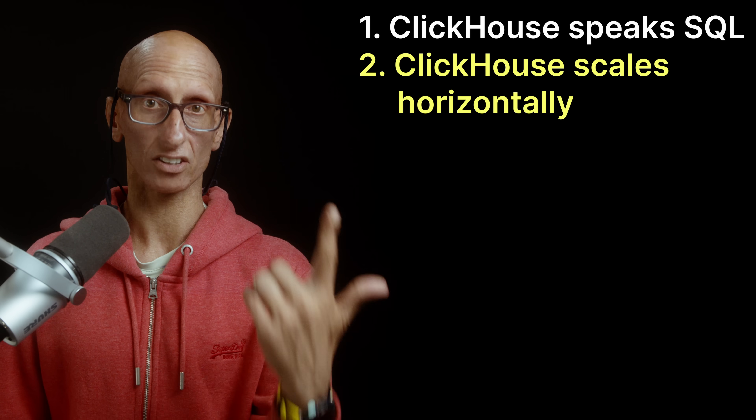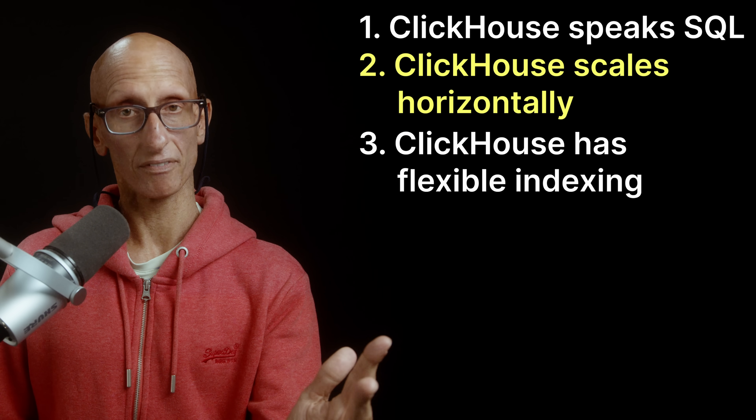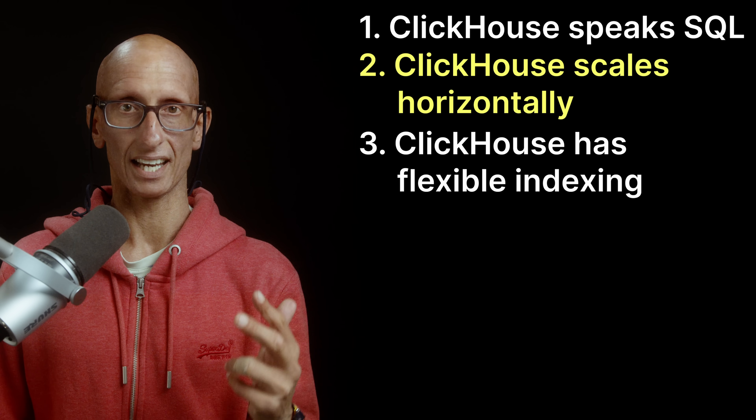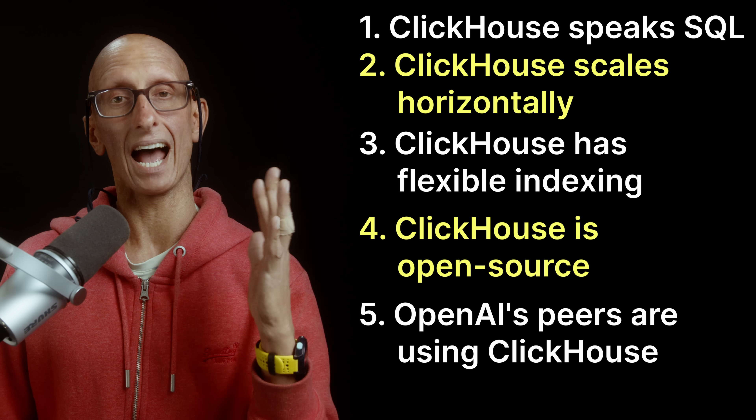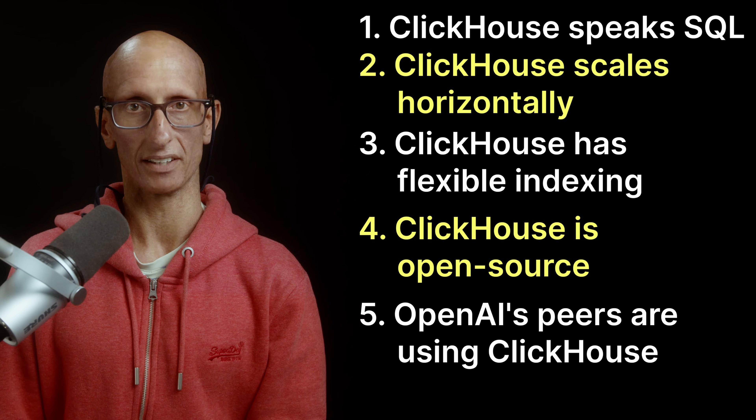So those are the five reasons that OpenAI chose ClickHouse for observability: it speaks SQL, it scales horizontally, it gives them flexible indexing, it's open source and extensible, and it's already trusted by their peers. If you'd like to see how ClickHouse fits into a complete observability stack, check out my next video on ClickStack, where I walk through how the whole ecosystem comes together.